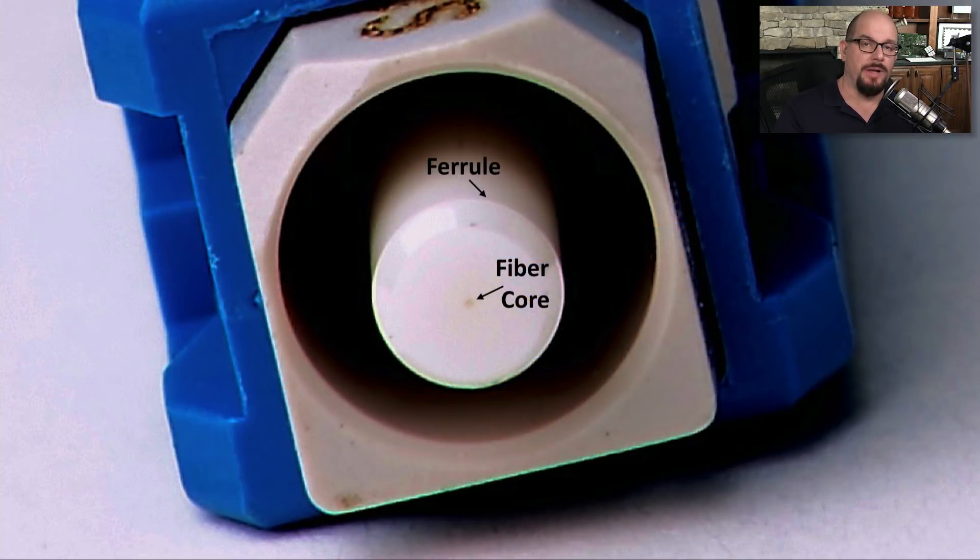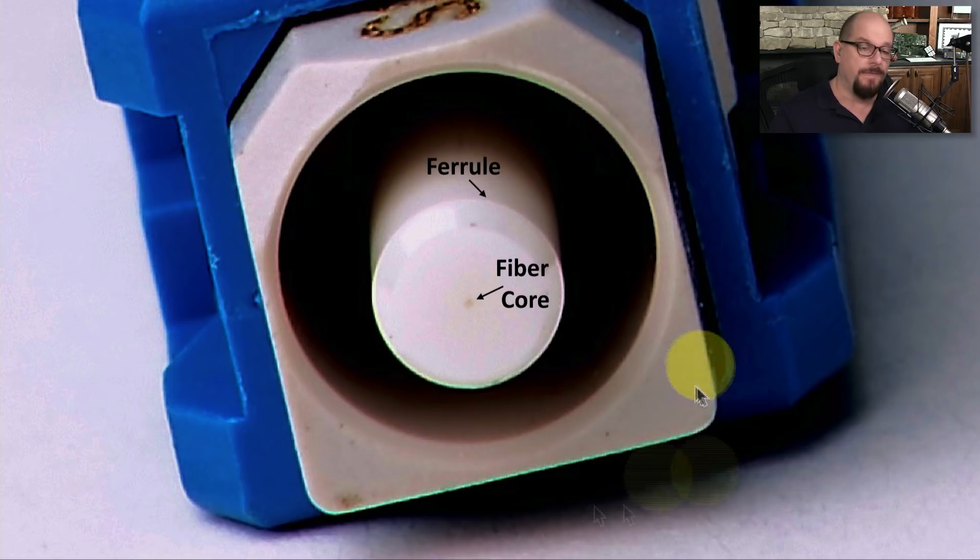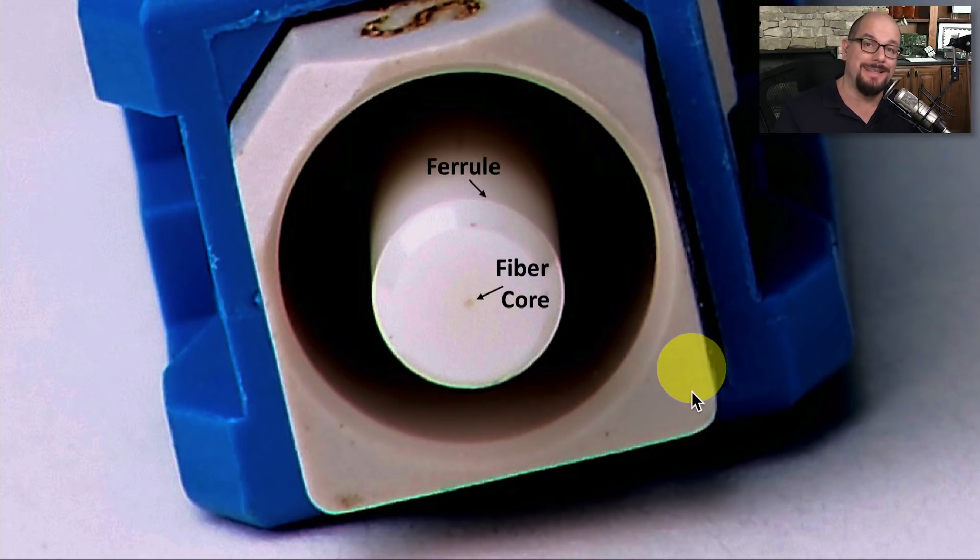Here's a close up picture of the end of an SC connector. This is the connector that will be plugging into your networking equipment. And the fiber core is this very small dot that's right in the middle. It's almost difficult to see in this picture. That core is protected with a ceramic ferrule around the outside. This allows you to connect and disconnect this fiber from your networking equipment without damaging the fiber that's on the inside.